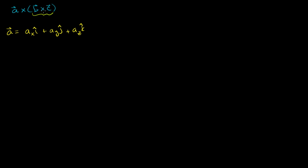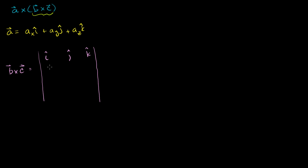Let's first take this cross product. If you've seen me take cross products, you know I like to do these determinants. So b cross c is going to be equal to the determinant with i, j, k up here — this is actually the definition of the cross product, so no proof necessary. We put b's x term, b's y coefficient, and b's z component in the second row, and cx, cy, cz in the third row.